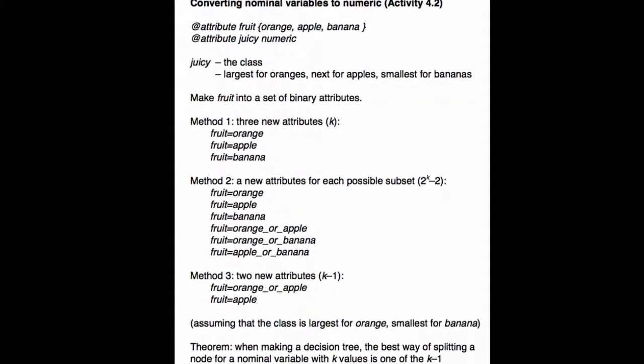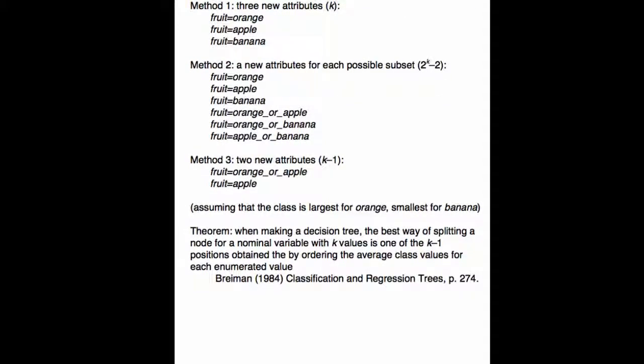And there's a theorem that if you're making a decision tree, the best way of splitting a node for a nominal variable with k values is one of the k minus 1 positions. Well, you can read this. And, in fact, this is reflected in method 3. That is the best way of splitting these attribute values. Now, whether that's a good thing in practice or not, well, I don't know. I mean, you should try it and see, you know.